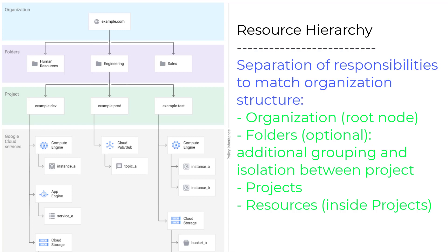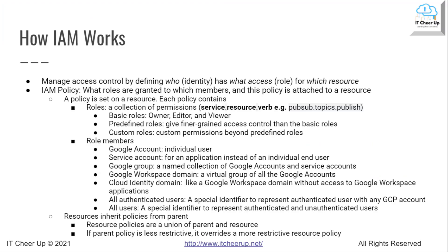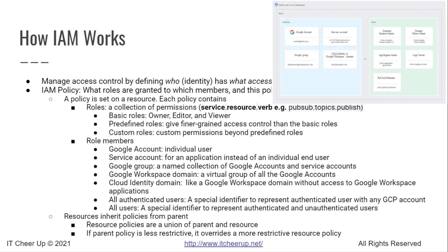Before summarizing how to set up policies at each level, let's look at how IAM works. With IAM, you manage access control by defining who has what access for which resource. IAM policy defines and enforces what roles are granted to which members, and this policy is attached to a resource. A policy is set on a resource, and each policy contains roles and role members. A role is a collection of permissions with the format service.resource.verb.